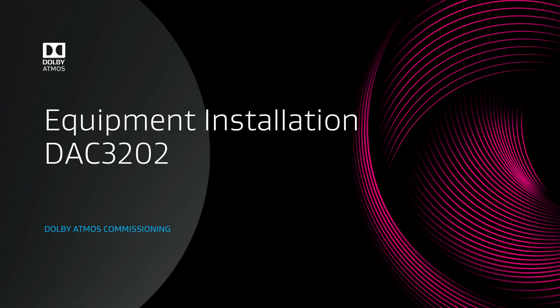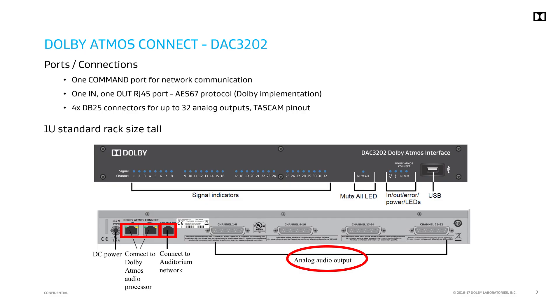This presentation will cover the installation procedure for the Dolby Atmos Connect Interface DAC-3202 processor. The DAC-3202 accepts Dolby's implementation of AES67 protocol and converts the bitstream to analog for downstream processing.